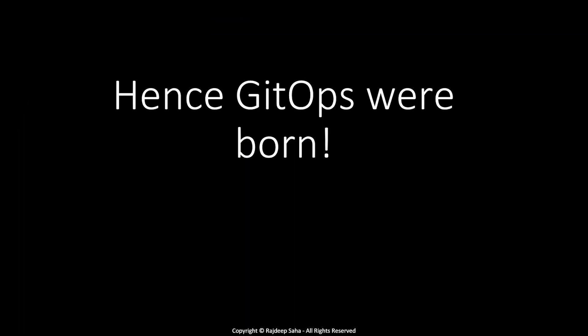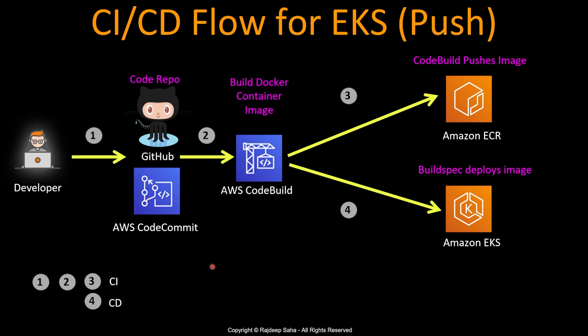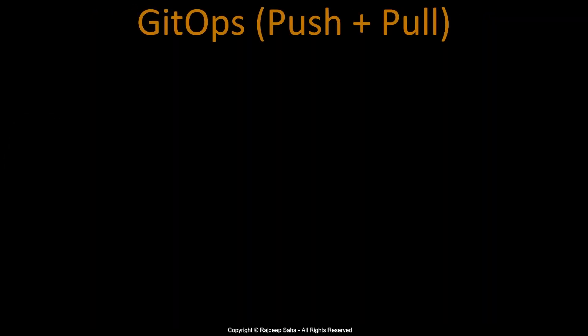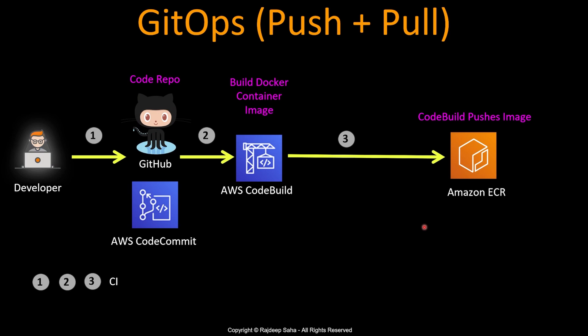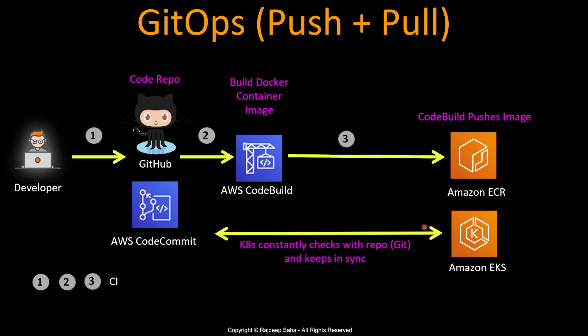Hence GitOps was born. If you think about a traditional CI/CD flow for EKS, it's more of a push model where AWS CodeBuild is pushing the deployment and manifest files to the Kubernetes cluster. Now let's take a look at GitOps, which is more of a push-plus-pull model. With GitOps, the CI part remains the same — the developer checks in code, the container image is built and pushed into a repository — but the CD or continuous deployment part is different. In the Kubernetes cluster, a software constantly runs and checks with the repository, hence the term Git, and keeps the cluster in sync.